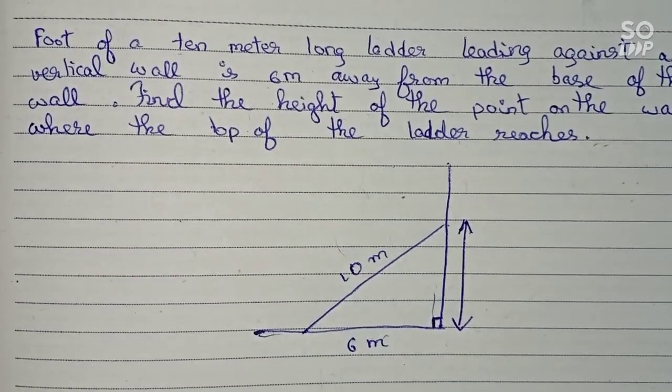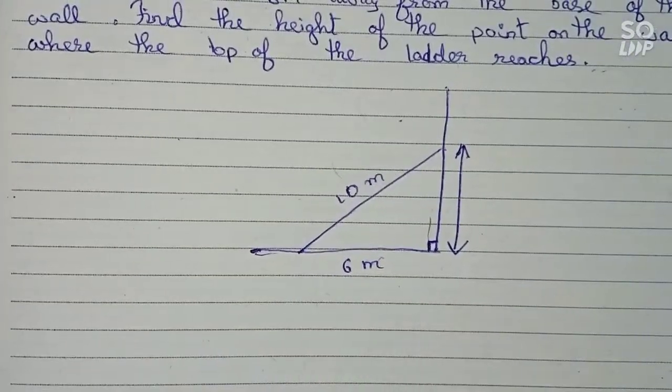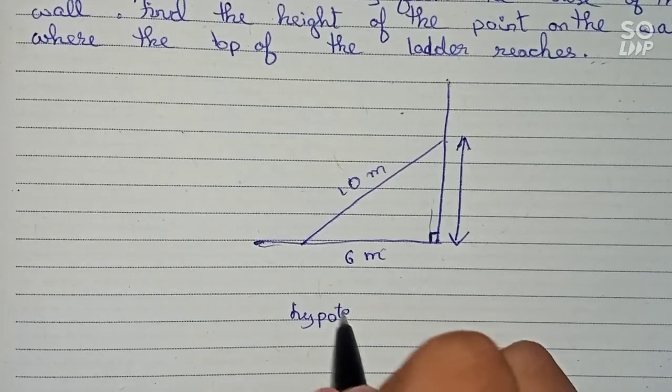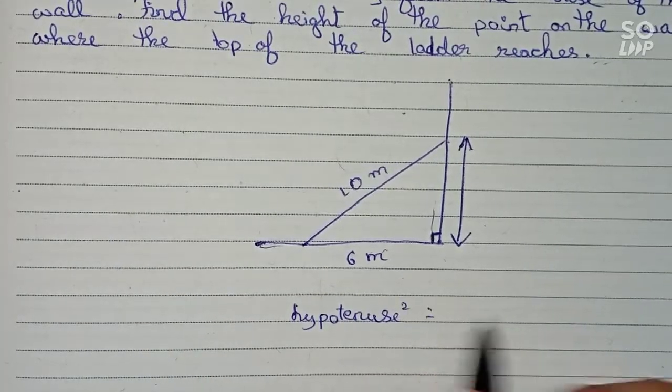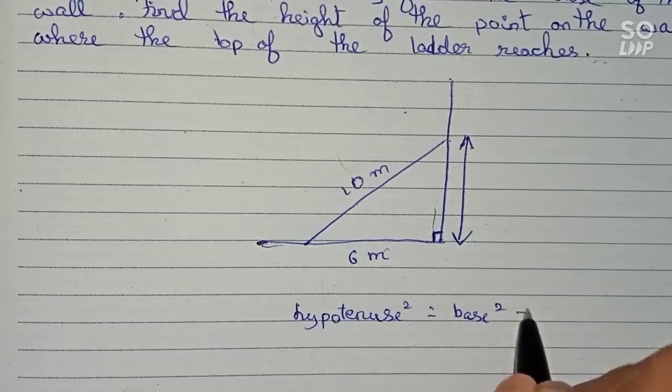So this you can easily find out by the Pythagorean theorem. According to Pythagorean theorem, hypotenuse squared is equal to base squared plus height squared.